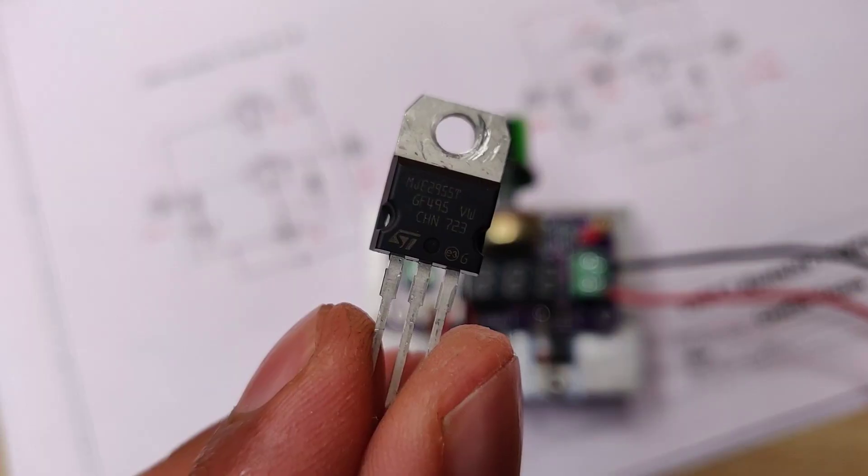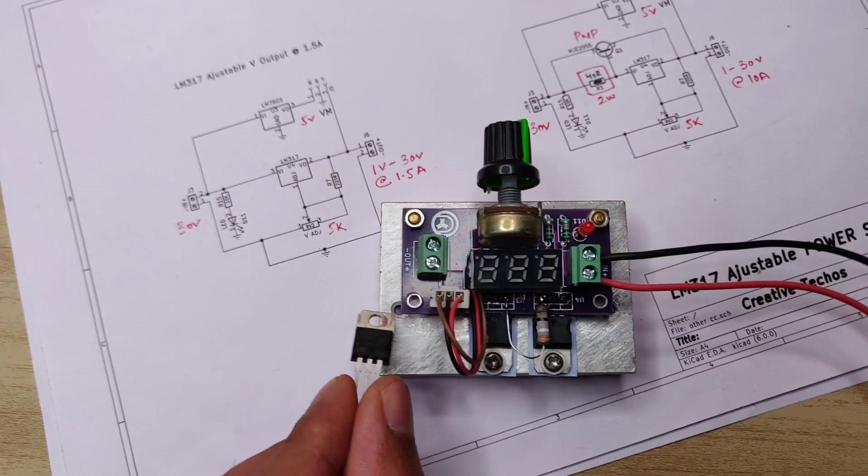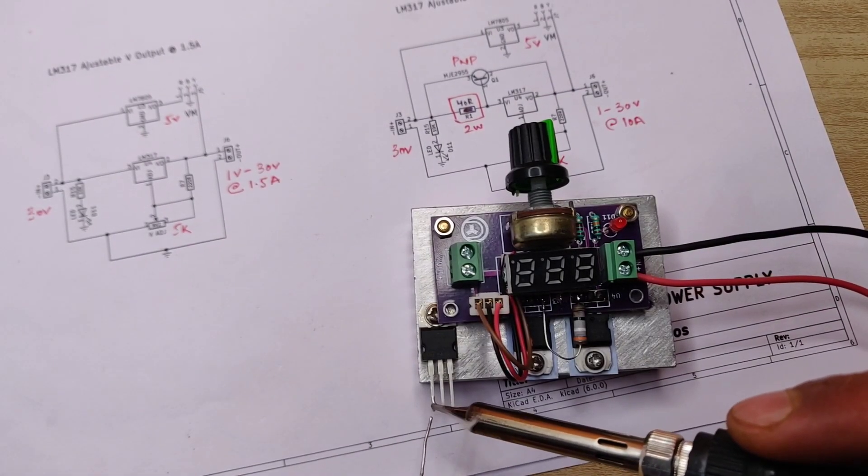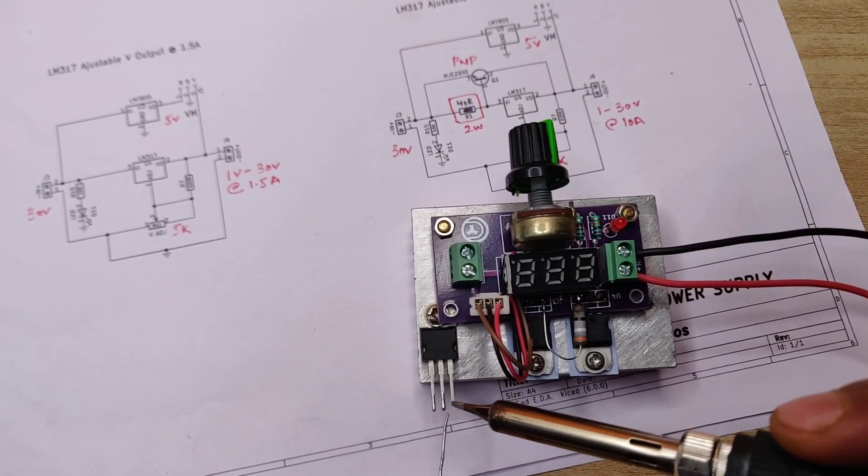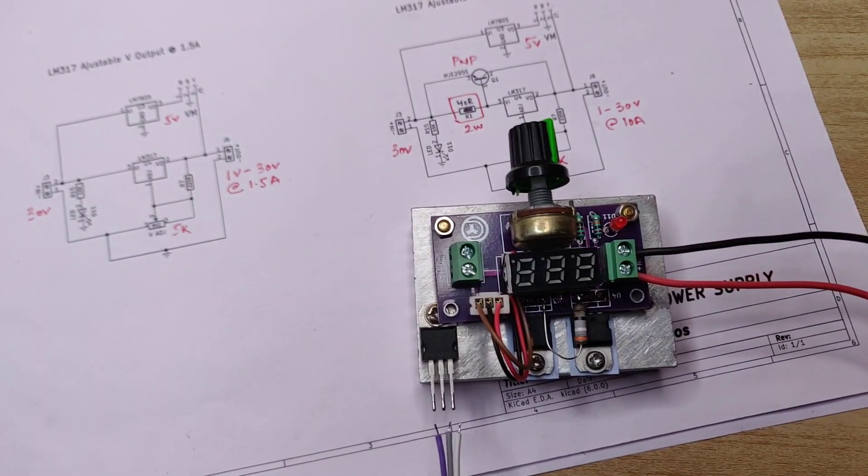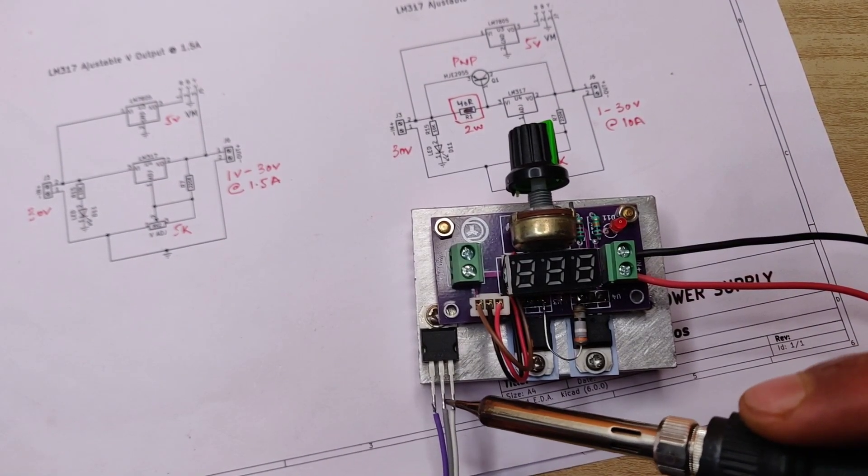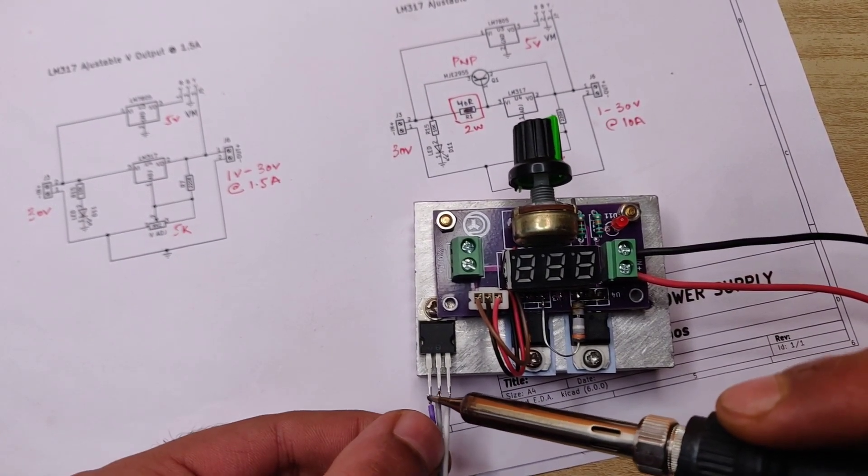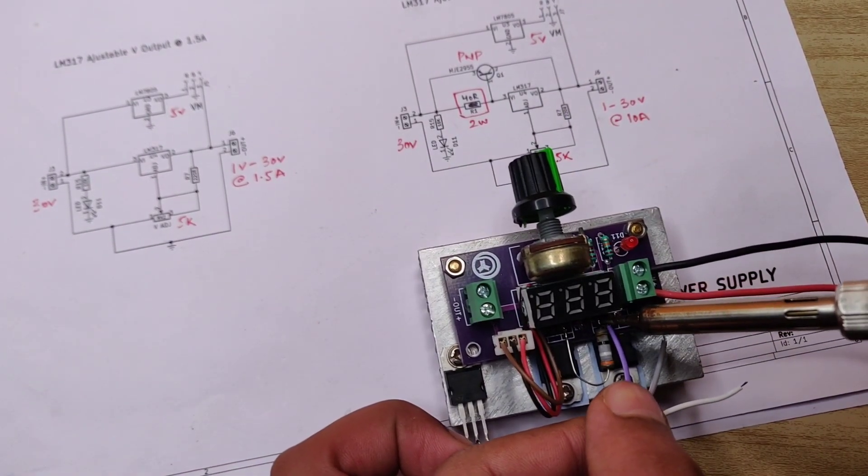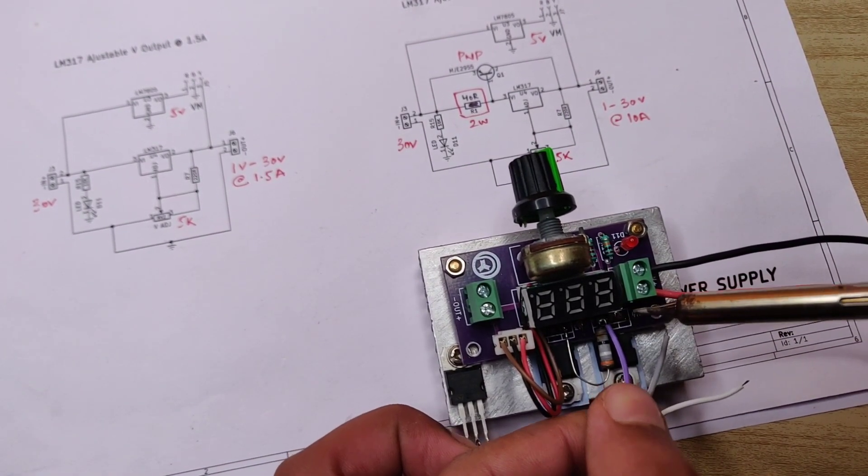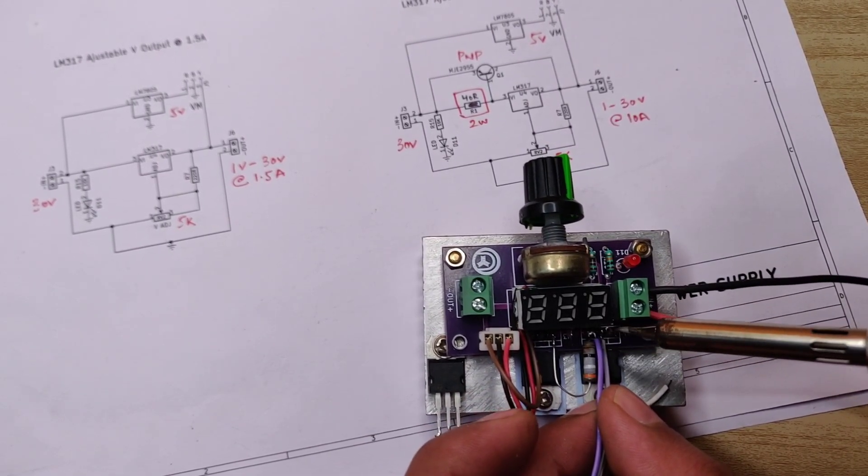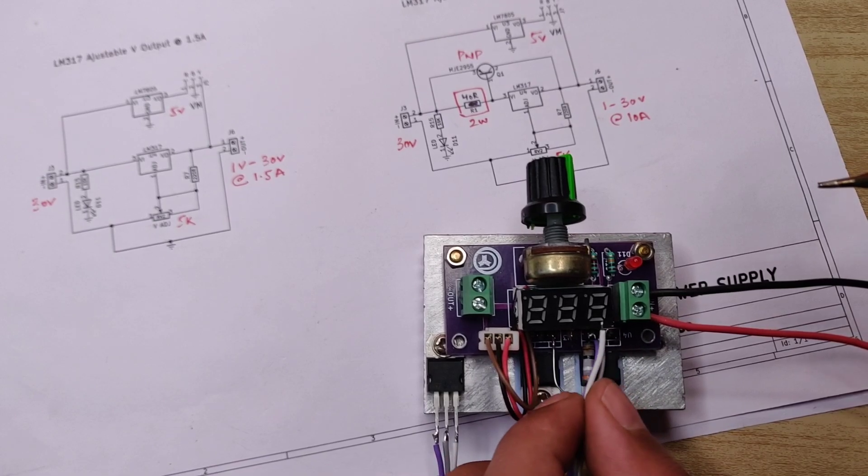Also we need to connect MJE295 NPN transistor: pin 1 as base, pin 2 as collector, pin 3 as emitter. I used wires to connect transistor with PCB. Files given in description as already designed for 10 ampere output. Base goes to pin 3 of LM317, collector goes to pin 2 of LM317, and emitter goes directly to DC input.